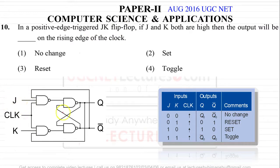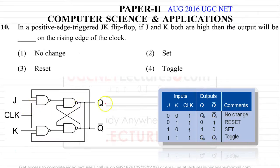Let's look at the positive edge-triggered JK flip-flop. We had an SR flip-flop, and we modified it to construct the JK flip-flop because when S equals 1 and R equals 1, the output was undefined — it was an invalid state. So to avoid that situation, we modified the SR flip-flop to construct the JK flip-flop.